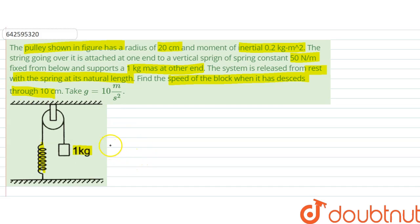So when it descends through 10 centimeter, what is the speed of the block? There would be an increment, that is x, and x is equal to 0.1 meter. Since it is going down, so it would go up as much as it is going down. If it is descending by 0.1 meter, this would also ascend by 0.1.